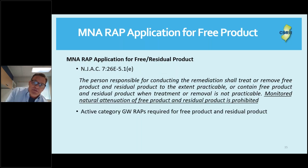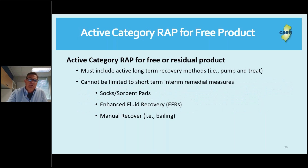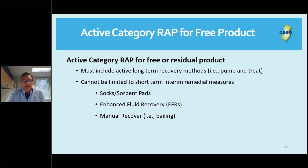MNA WRAP applications for free or residual product are a clear issue. The tech regs specifically state that a person responsible for conducting remediation shall treat or remove free product and residual product to the extent practical, or contain it. Monitored natural attenuation of free product and residual product is prohibited — free and residual product requires active groundwater remedial action permits. If you do have free and residual product and it is an active-category WRAP, it must include some type of long-term recovery methods such as pump-and-treat, not just periodic manual recovery by bailing or sorbent pads.